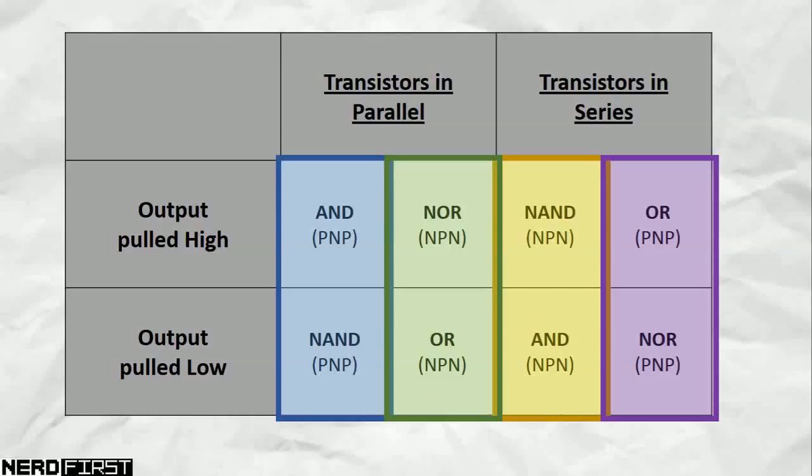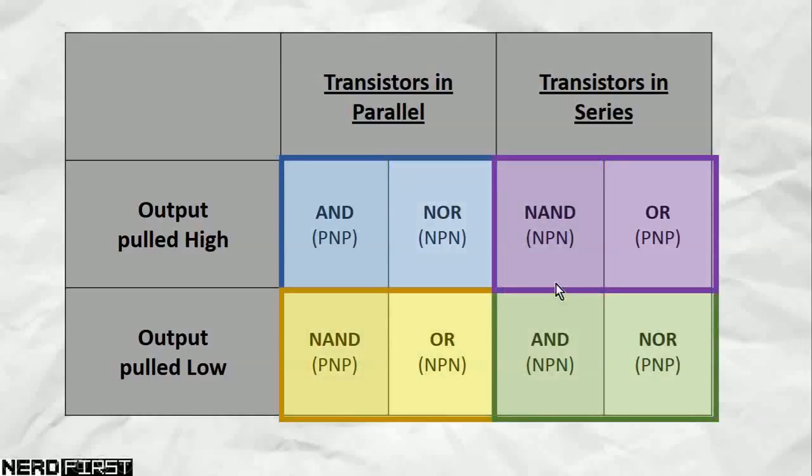Another property comes about when we're trying to build our gates. We saw how two types of gates looked exactly the same when laid out, the only difference being the type of transistor used. For example, if you have your transistors in parallel, and you have your output pulled high, using PNP transistors gives you an OR gate. Pulling them out and replacing them with NPN gives you a NOR gate.